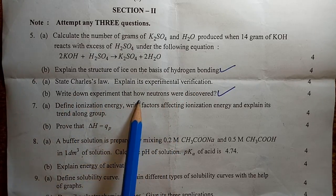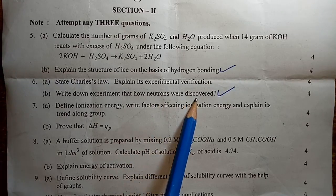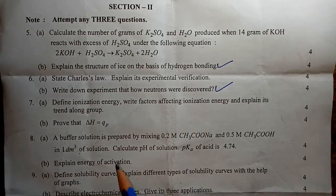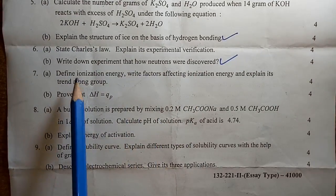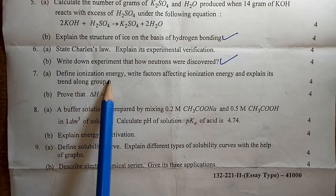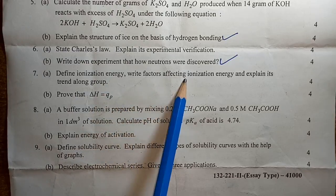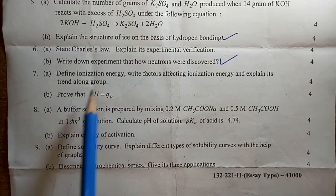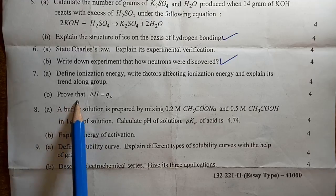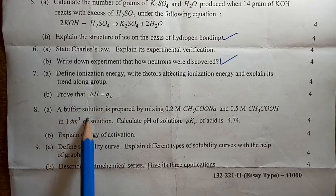How did the experiment explain how neutrons were discovered? Then define ionization energy. Write the factors affecting ionization energy and explain its trend along a group and period. Prove that delta H is equal to QP.